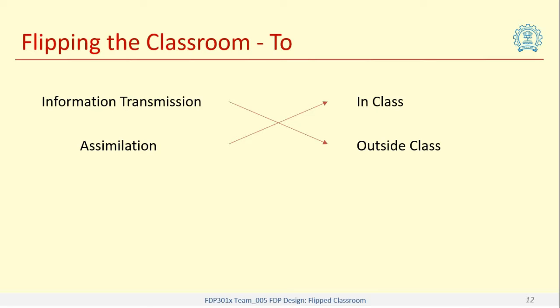All those levels of concepts can be worked on by looking at information transmission and the higher order concepts or higher order cognitive levels they can be dealt with in class, which is where the students can have difficulty. This is the key idea of a flipped classroom.